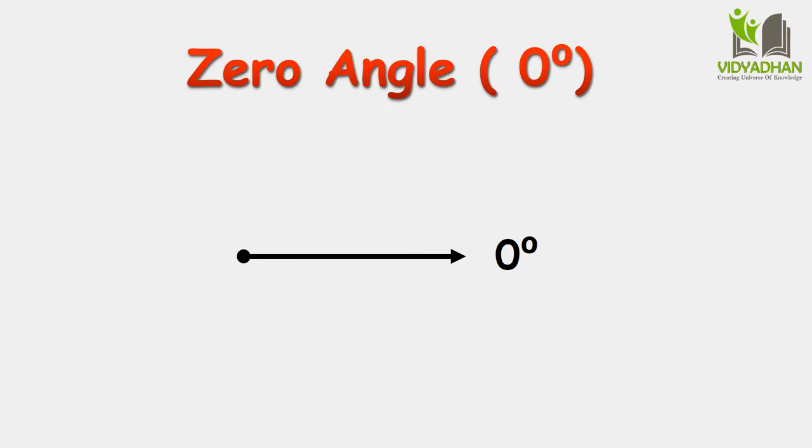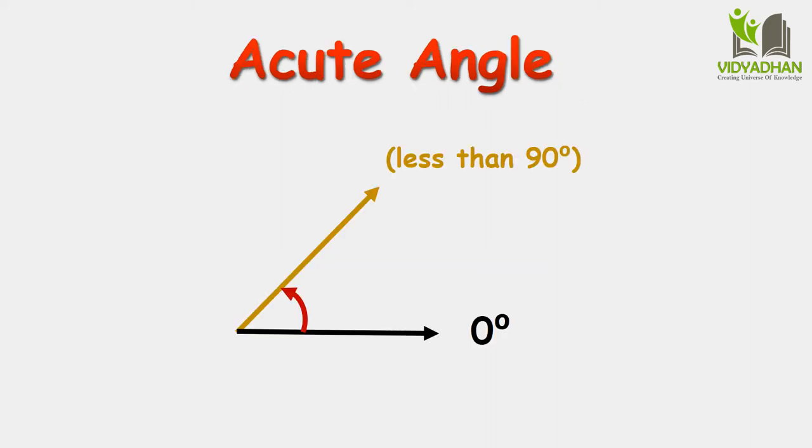Zero Angle: An angle with a measure of 0 degrees is called a zero angle. Acute Angle: An angle which measures less than 90 degrees is called an acute angle.